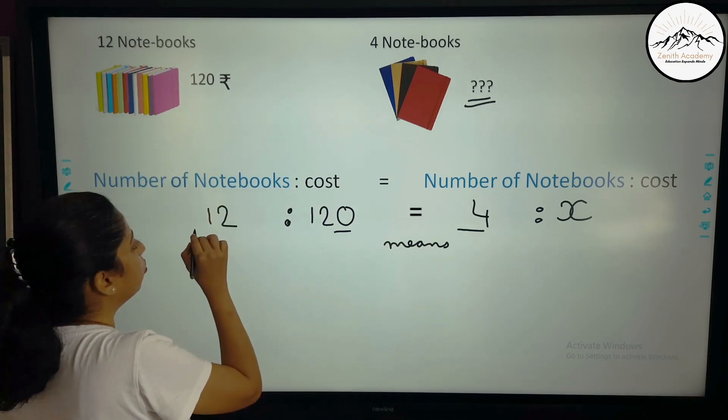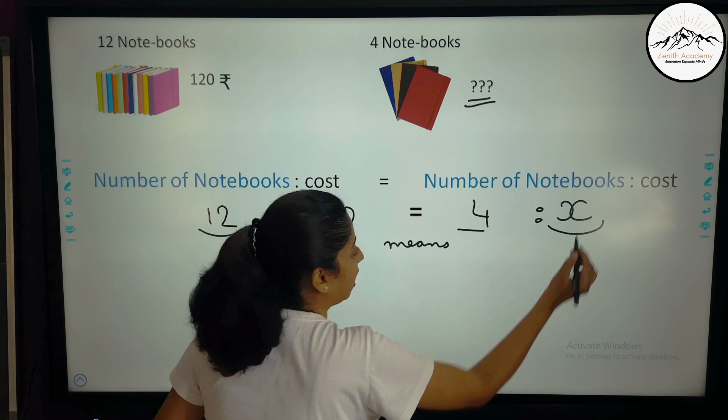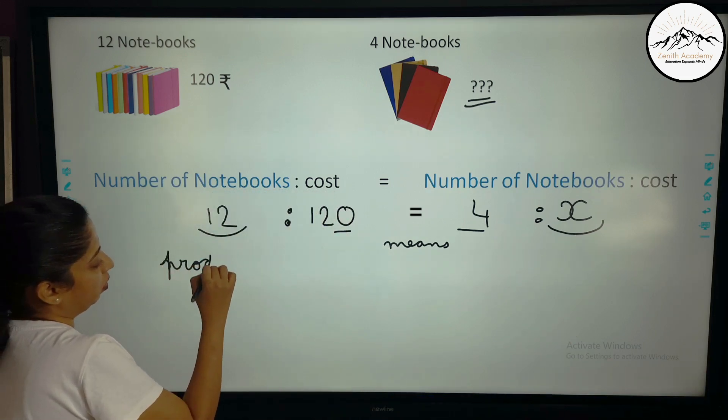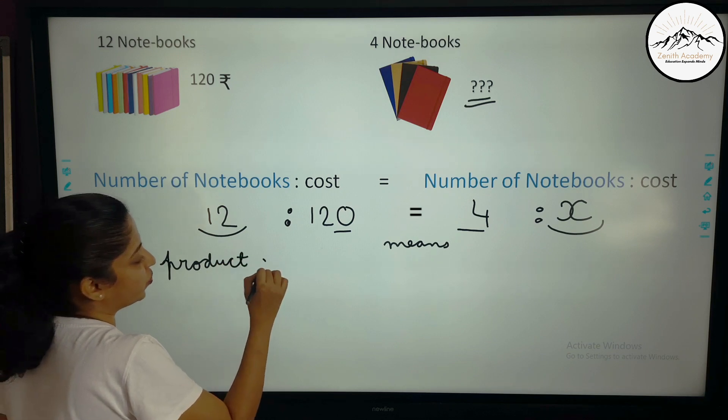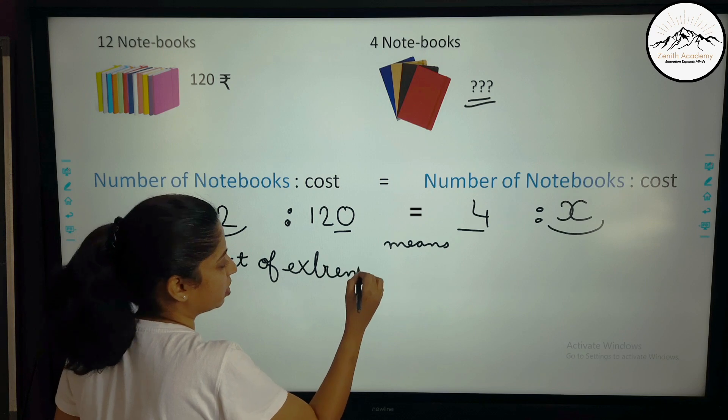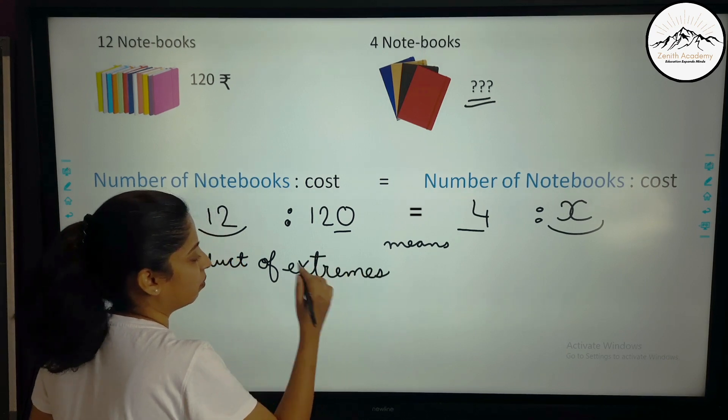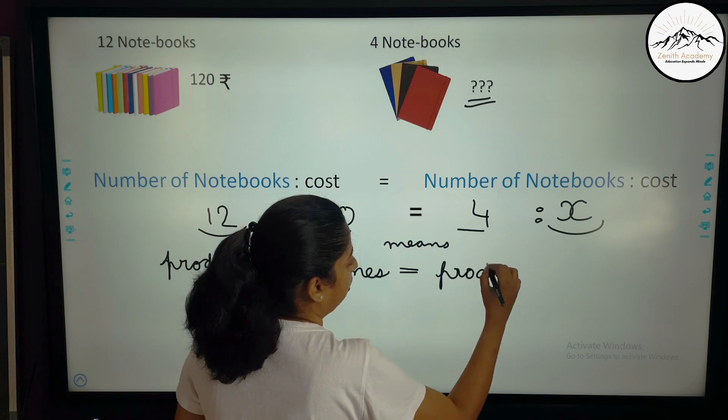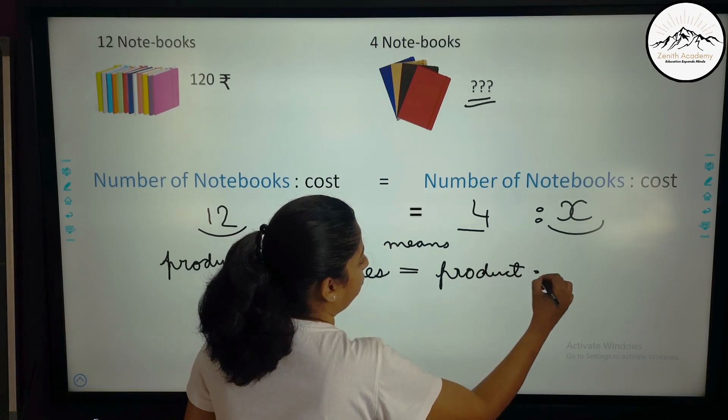So now these two are means. And these two, this 12 and x are extremes. And we know the product of extremes is equal to product of means. Or product of means is equal to product of extremes.